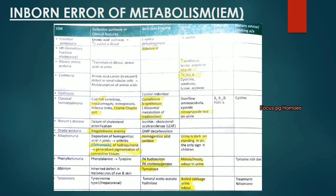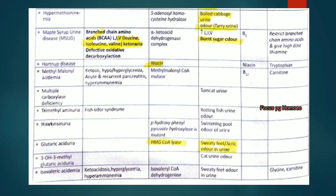Tyrosinemia type 1 (hepatorenal): patient presents with cabbage-like urinary odor. Hypermethioninemia: deficient enzyme is S-adenosyl homocysteine hydrolase; patient has tar urine or boiled cabbage odor.